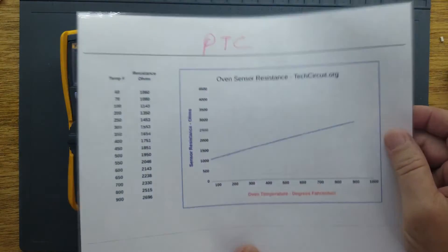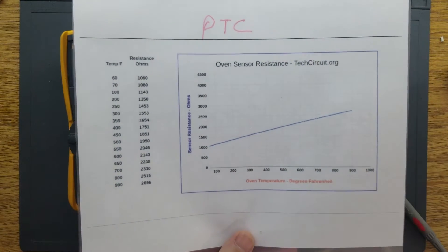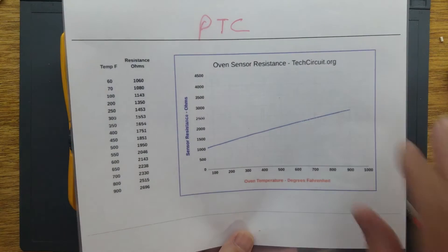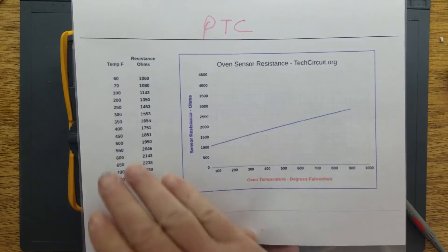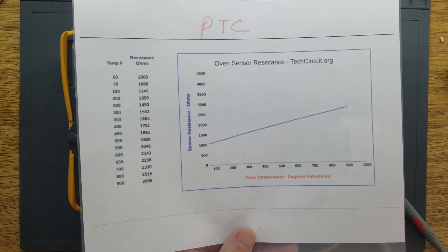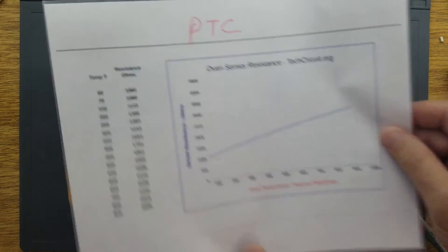Because this is so linear, you could just simply in a microcontroller or whatever you're using to interpret this temperature, you could actually just have a linear equation to determine the temperature of this thermistor. You could get a pretty close approximation of that temperature.